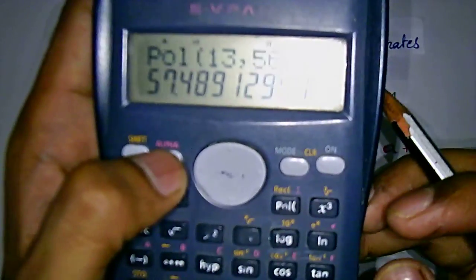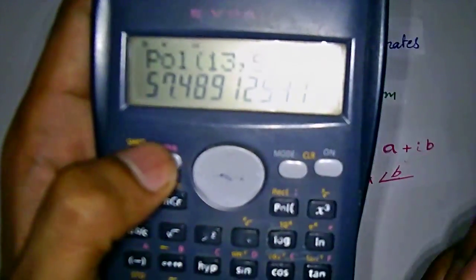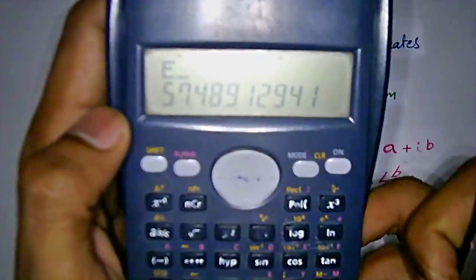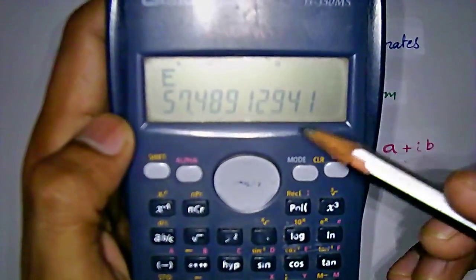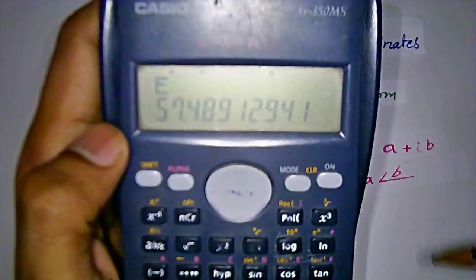When we are pressing the alpha button, alpha E, which equals to polar, gives the modulus value of the rectangular form.